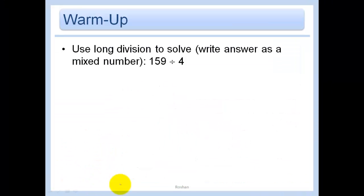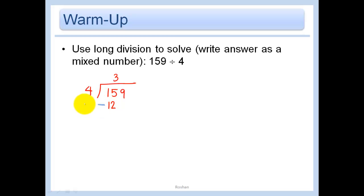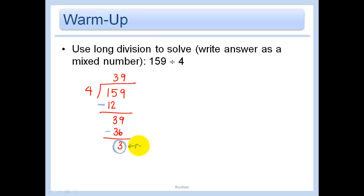We'll warm up with some long division, since today's lesson involves polynomial long division. When we do 159 divided by 4: we can't do 1 divided by 4, so we go to 15. 15 divided by 4 is 3, and 3 times 4 is 12. We subtract to get 39, then 39 divided by 4 is 9, and 9 times 4 is 36. Subtracting gives a remainder of 3, written as 3/4, so the answer is 39 and 3 fourths.